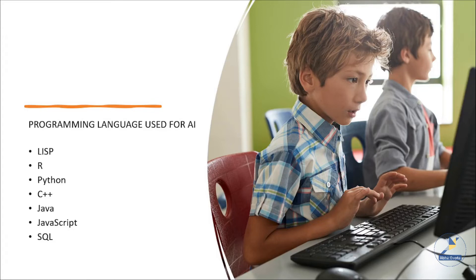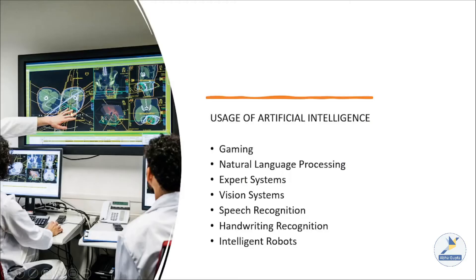To create an AI-based application, you need to use programming languages. There are various languages which could be used — LISP is the most commonly used historically, and now Python is a very popular and easy language that people are learning to develop AI-enabled systems. R and C++ are also used to program AI-based applications. AI can be used anywhere the internet is being used — in gaming, expert systems, vision systems, pattern recognition, speech recognition, and robotics.